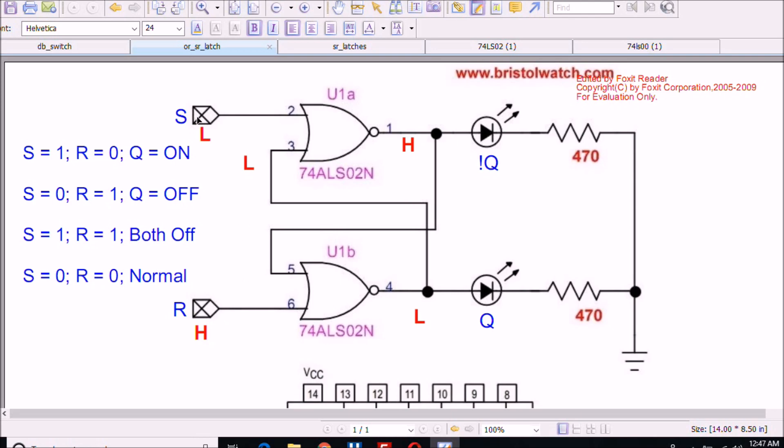All right, we're going to leave S in its normally low state and we're going to make R high. By making this high, we're going to make the output at pin 4 automatically low, and the Q LED will go off. That low is fed back to pin 3 of the upper NOR gate, and two lows going into a NOR gate produces a high, thus turning on my not Q LED.